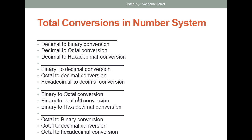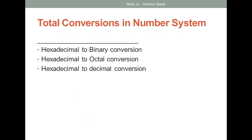Then we have binary to octal, binary to hexadecimal conversions. Similarly, octal to binary, octal to decimal, and octal to hexadecimal. For hexadecimal: hexadecimal to binary, hexadecimal to octal, and hexadecimal to decimal conversion.